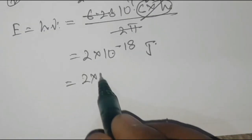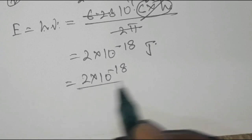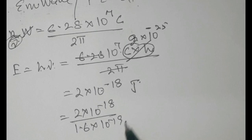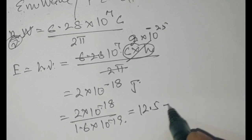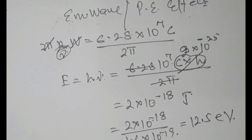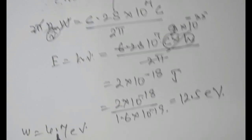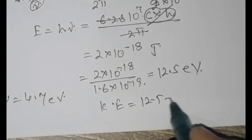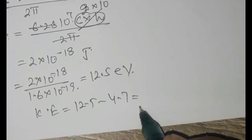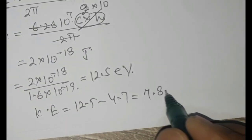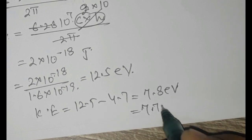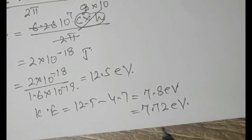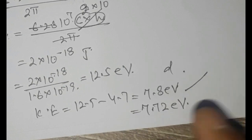Converting to electron volts by dividing by 1.6×10⁻¹⁹, we get 2×10⁻¹⁸ / 1.6×10⁻¹⁹ = 12.5 eV. The work function is given as 4.7 eV, so the kinetic energy equals 12.5 − 4.7 = 7.8 eV. Out of the options given, the nearest value is 7.72 eV, so the answer is D.